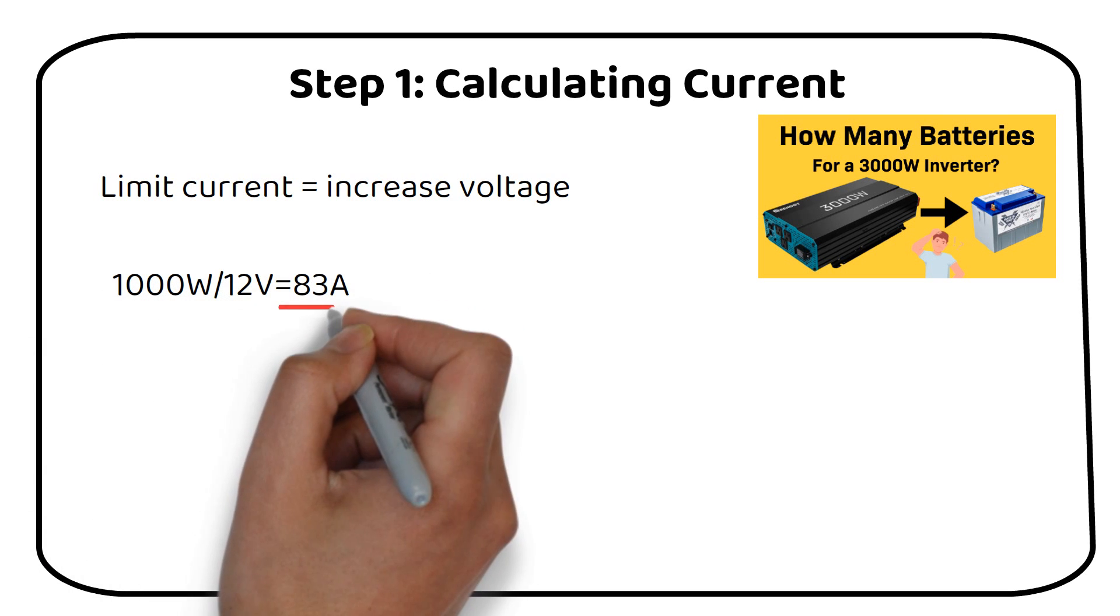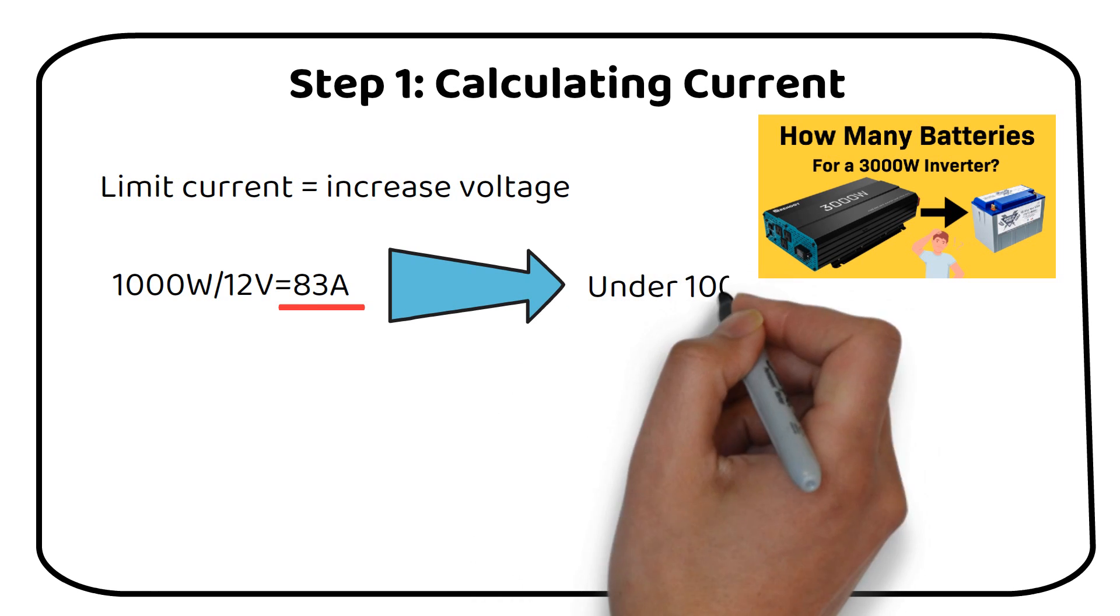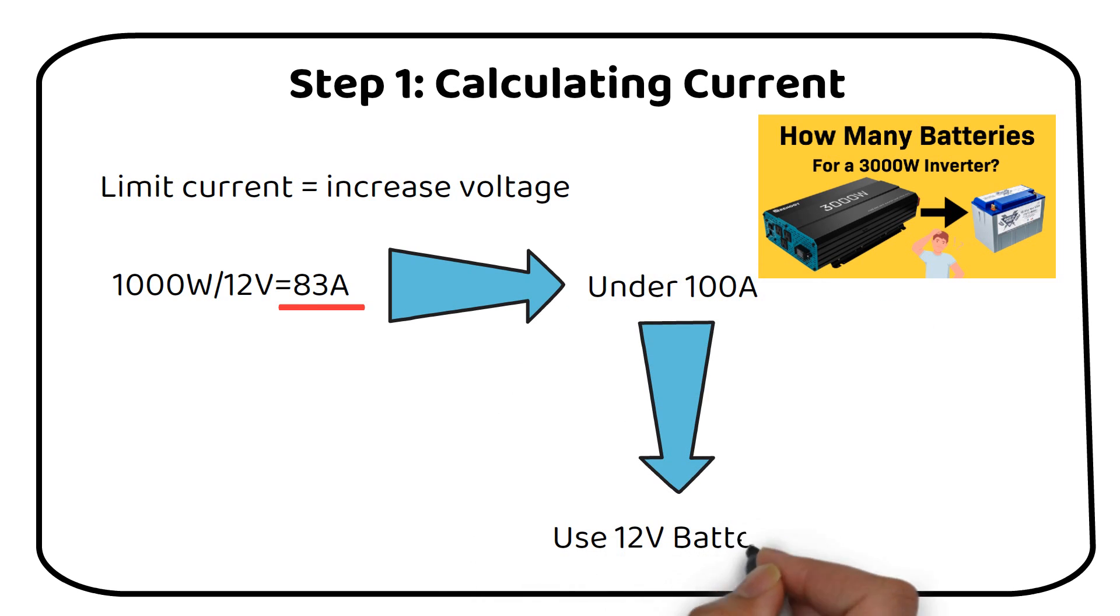We get 83 amps, which is under 100 amps. We can use a 12 volt battery with a 1000 watt inverter.